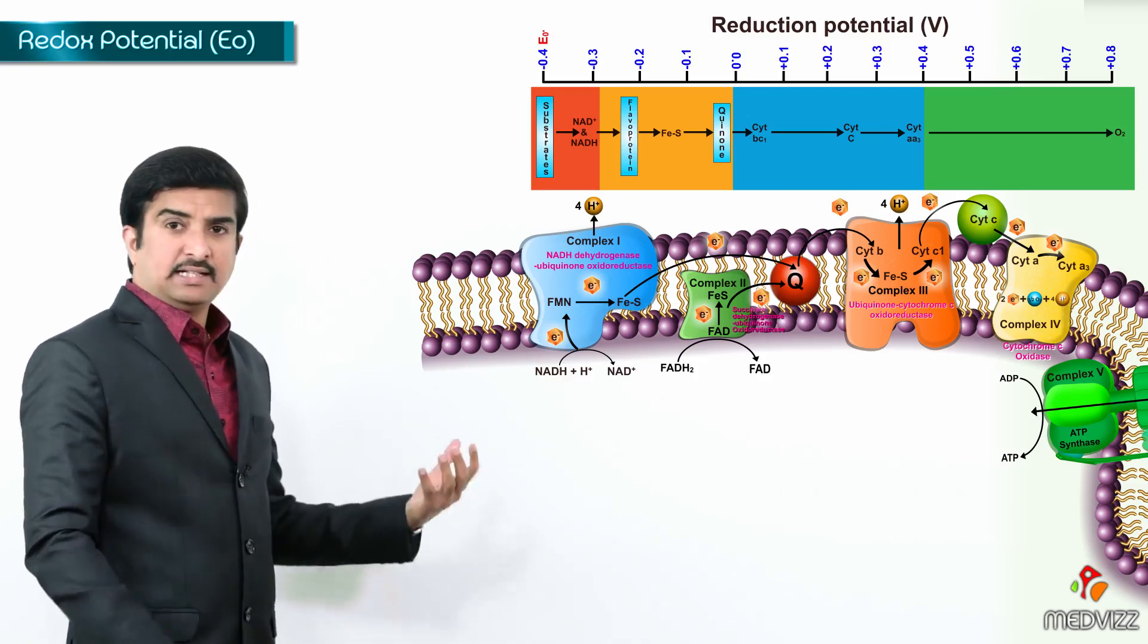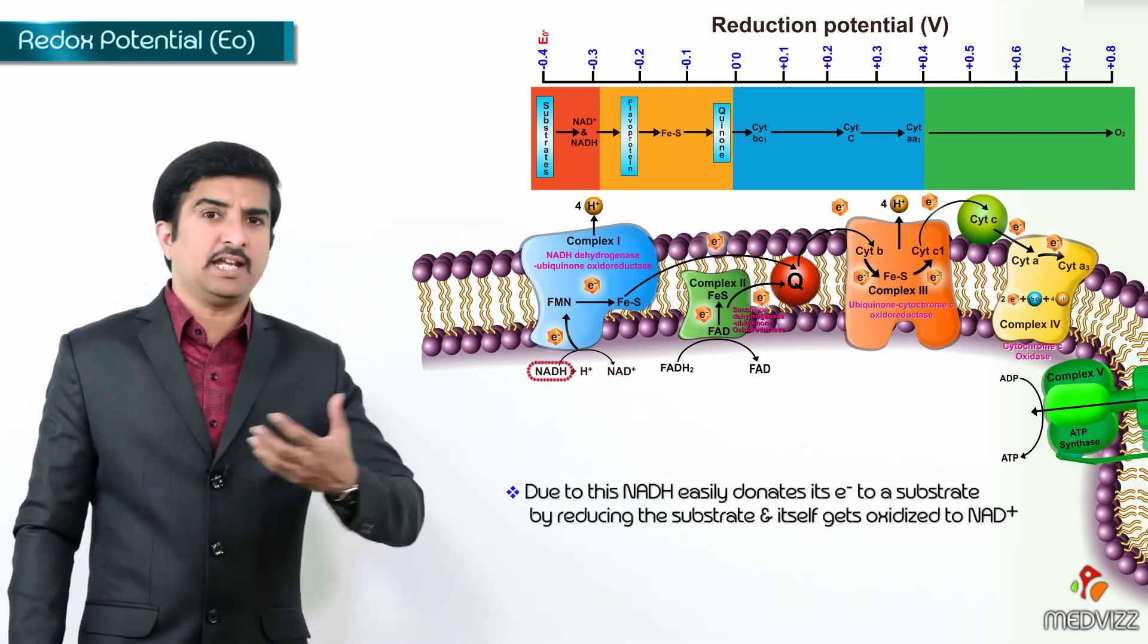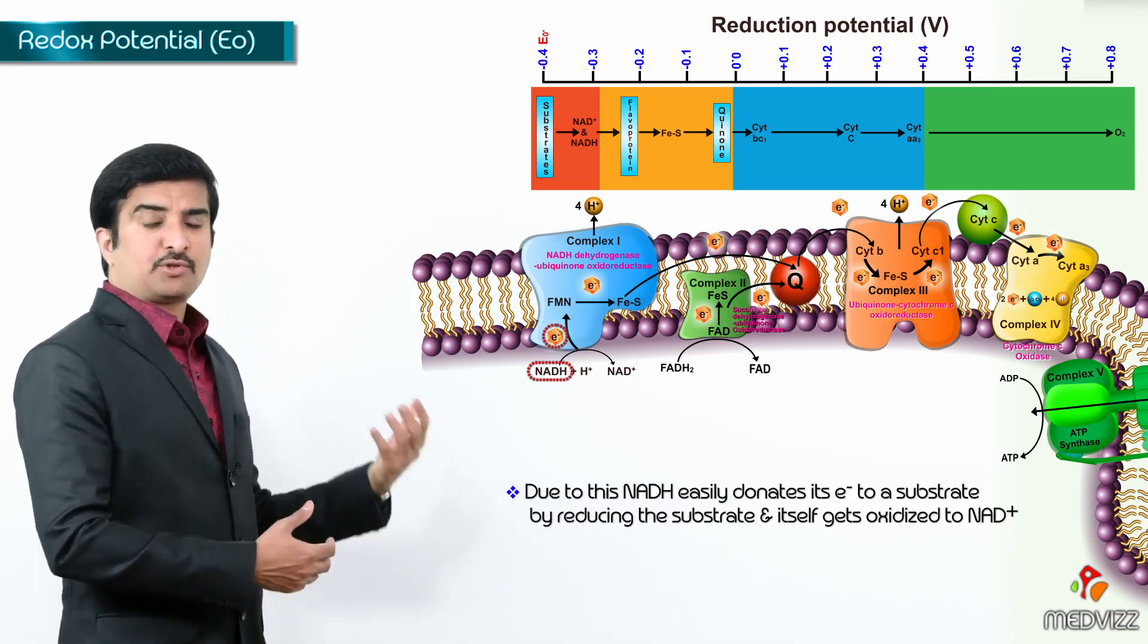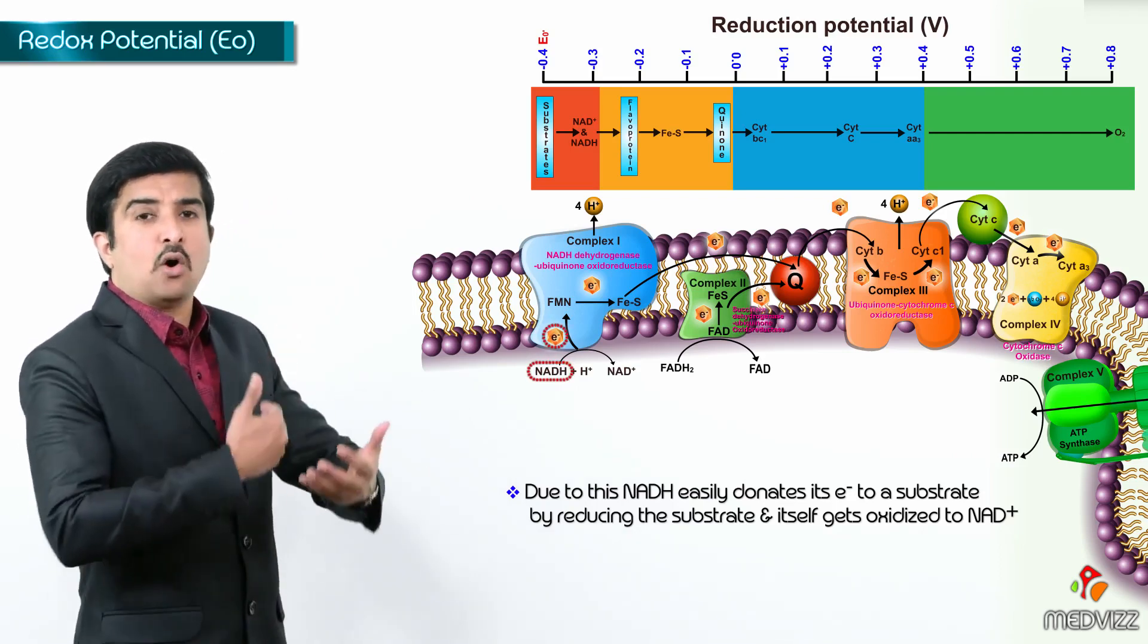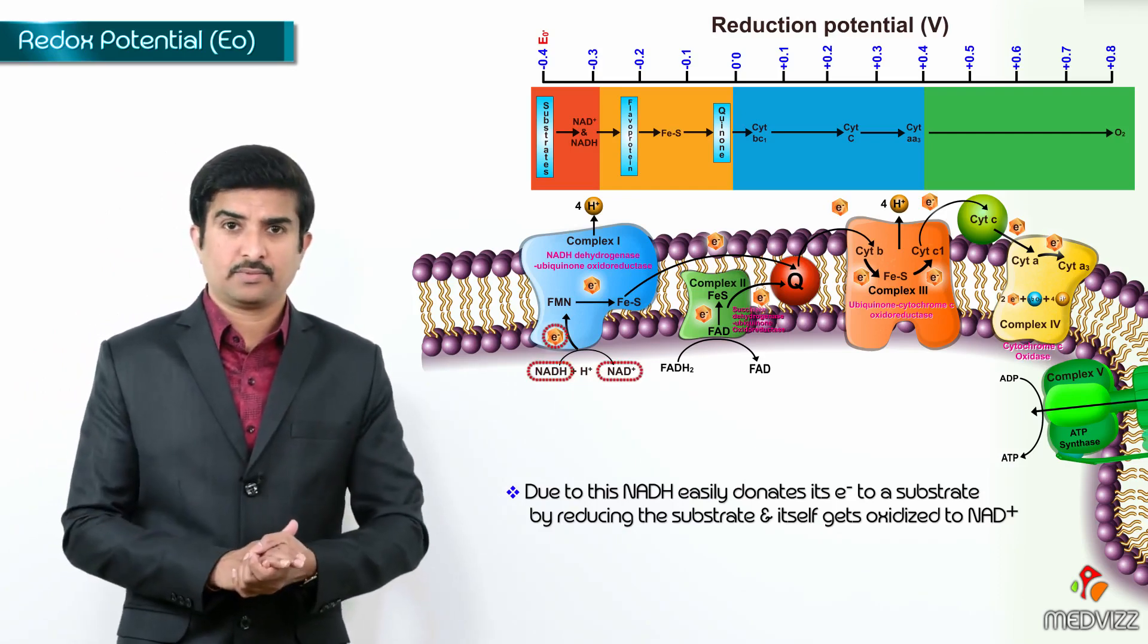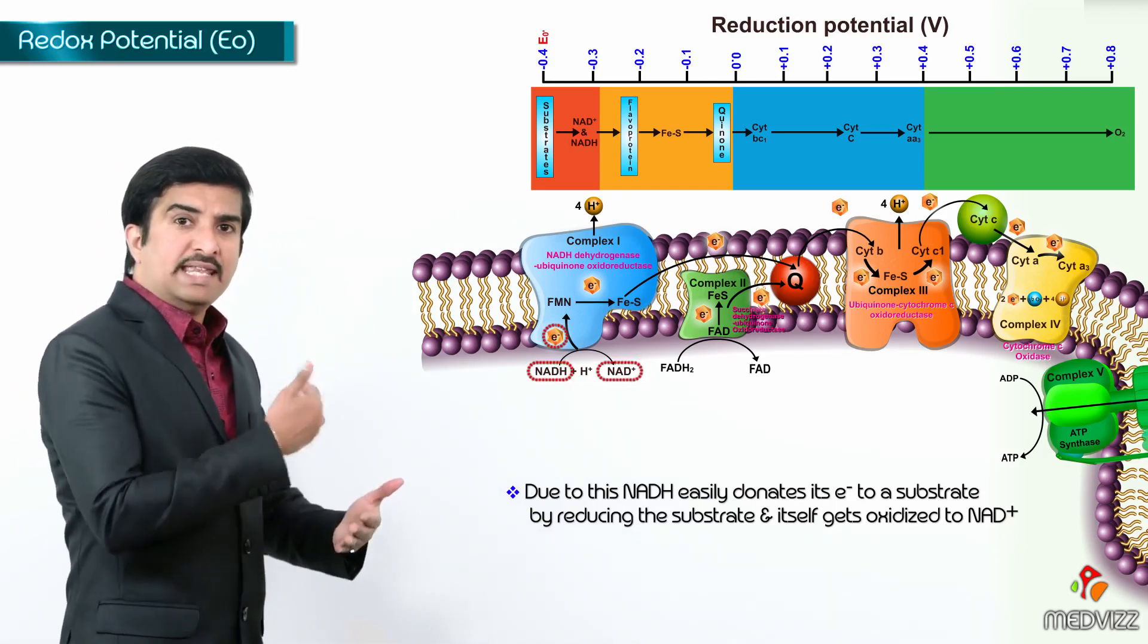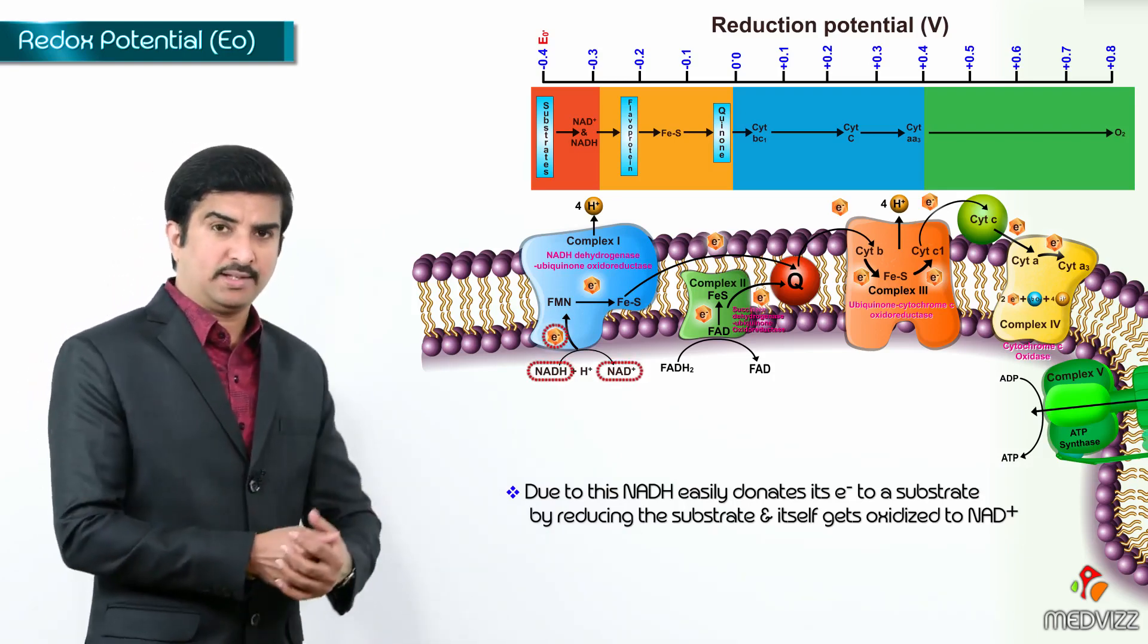That explains that the NADH easily donate its electrons to a substrate reducing the substrate and itself get oxidized to NAD+. So, this is how electrons are transferred from more negative redox potential to the positive ones.